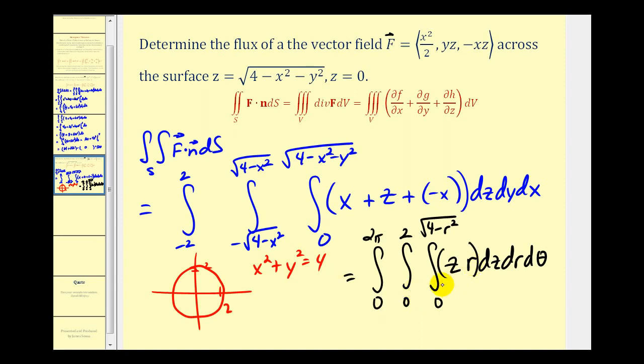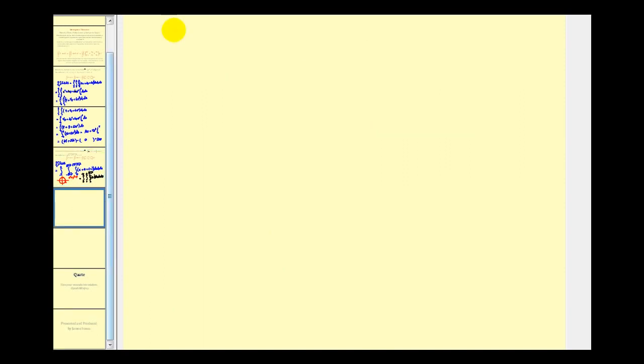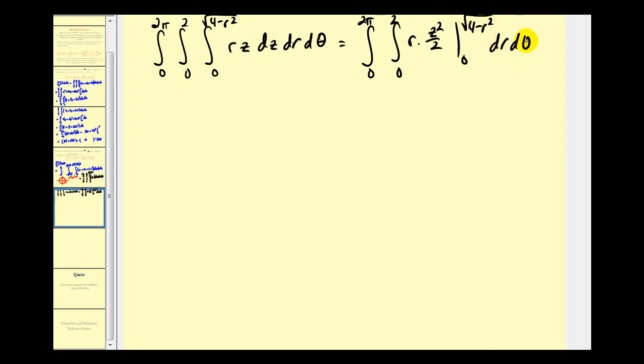Let's evaluate this on the next page. Integrating with respect to Z, we're going to have R times Z squared over two. We're replacing Z with the square root of four minus R squared, so we have one half R times four minus R squared.